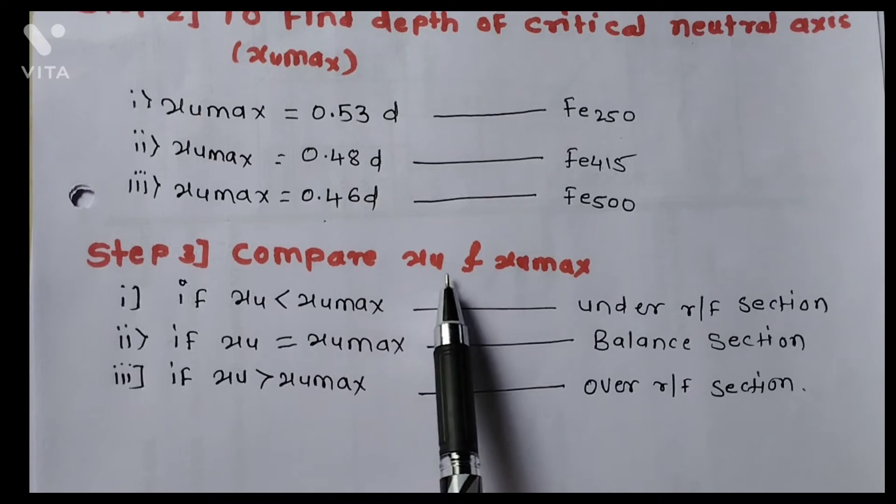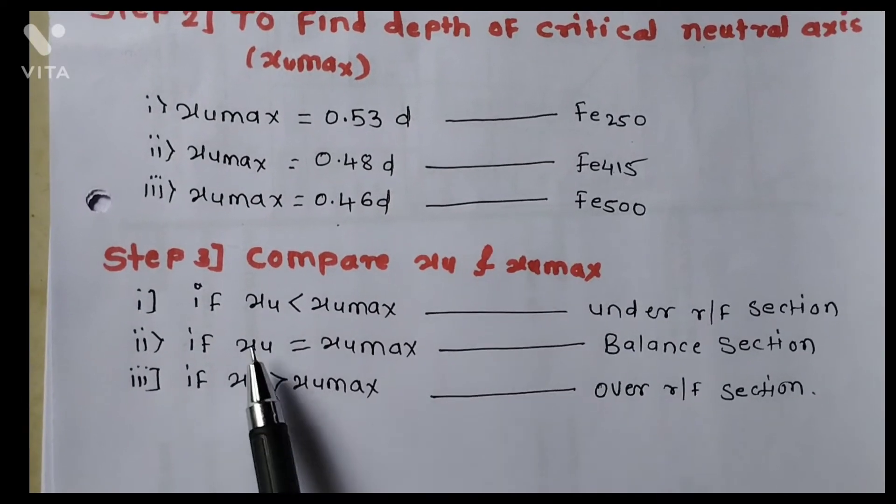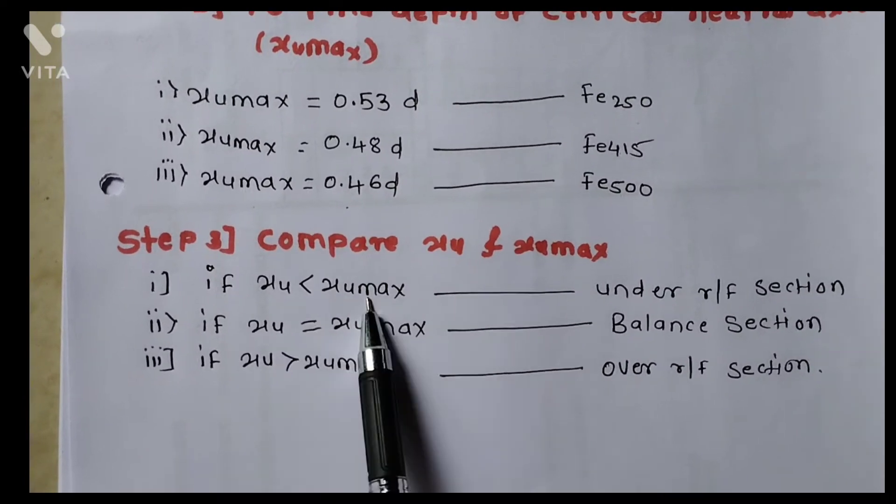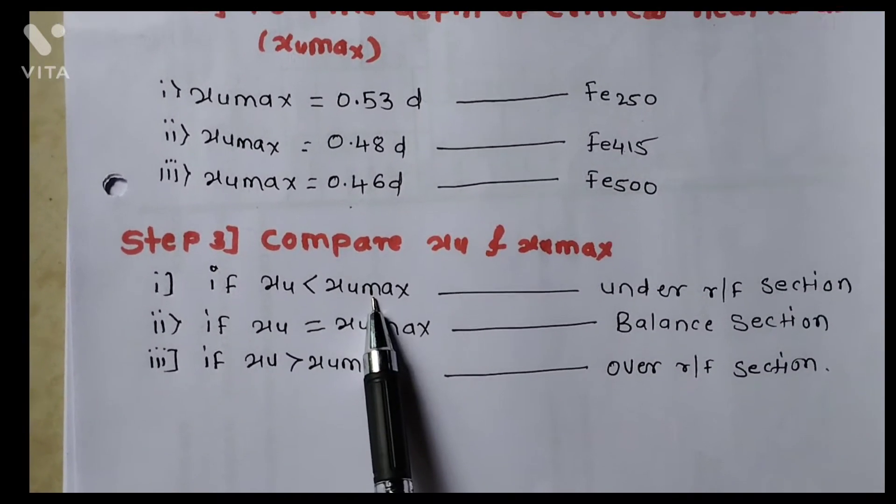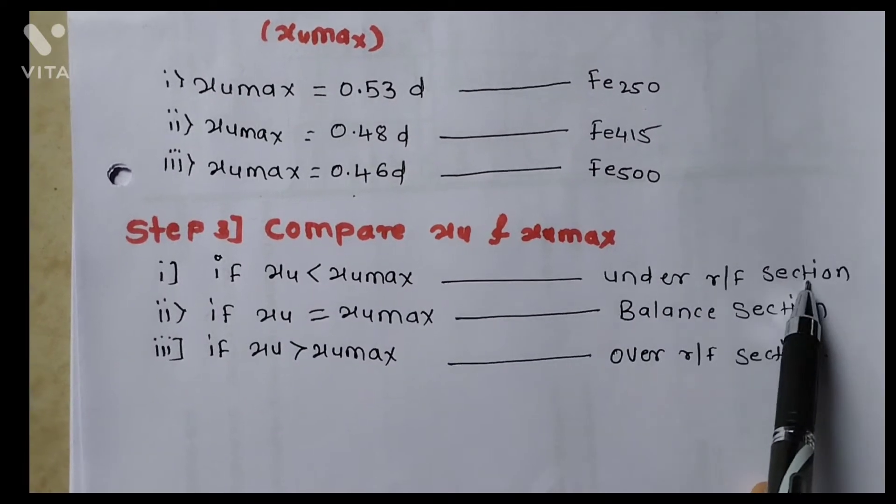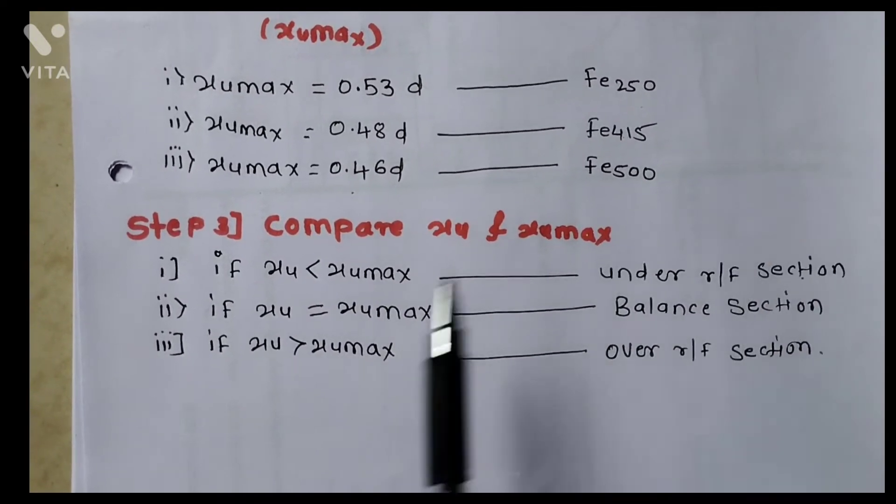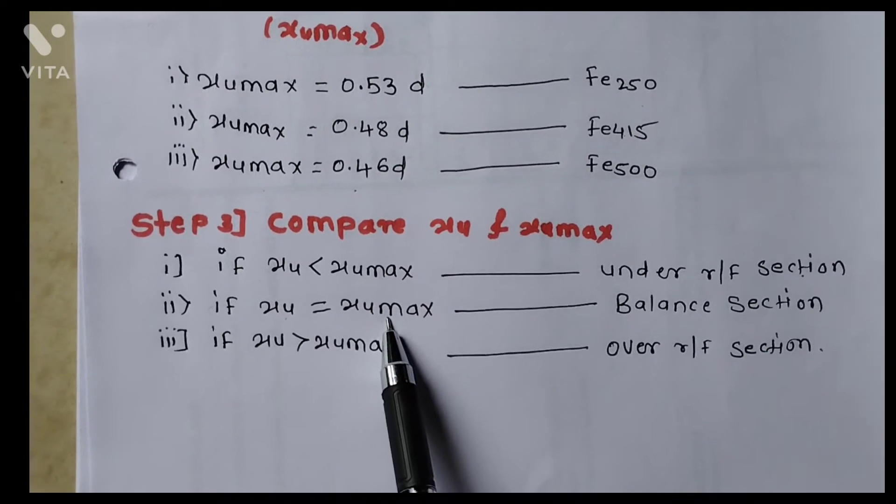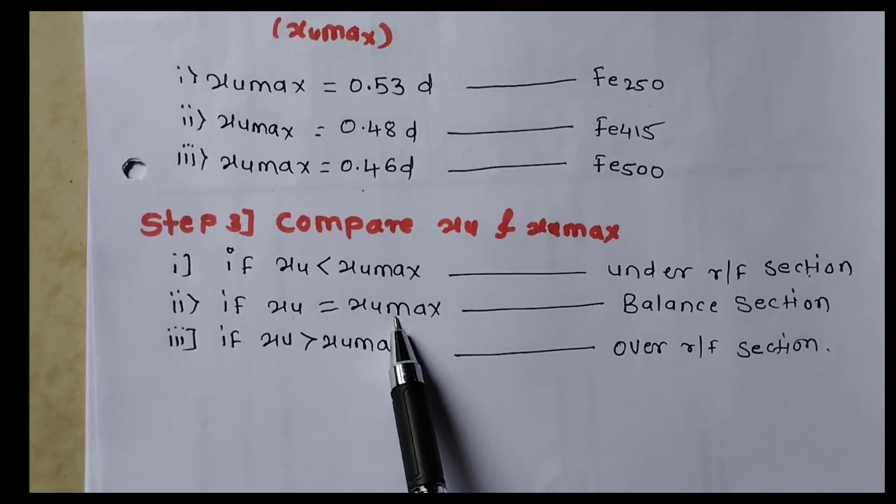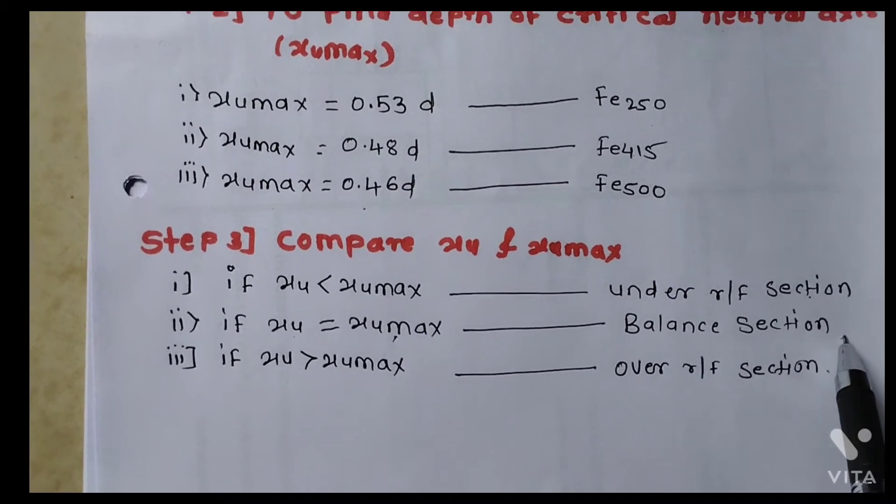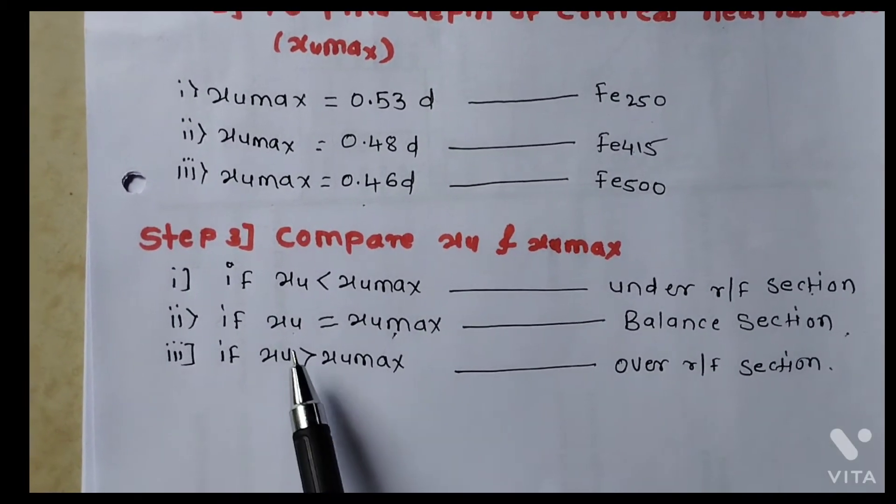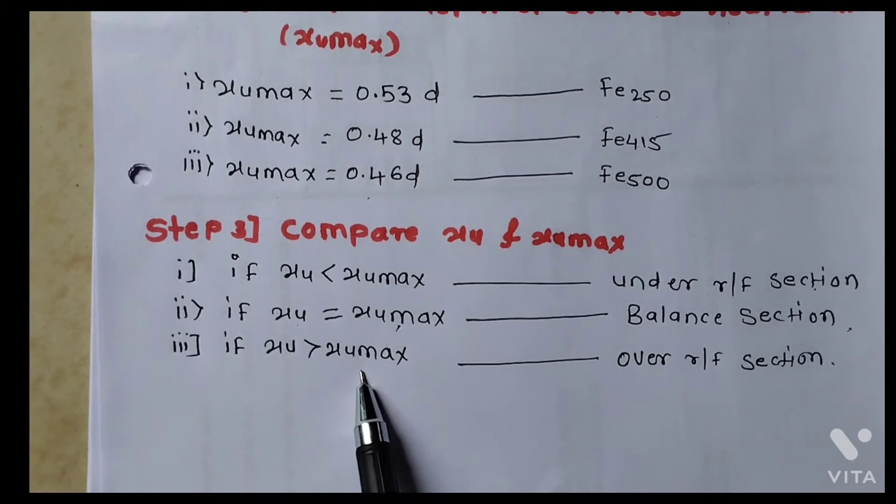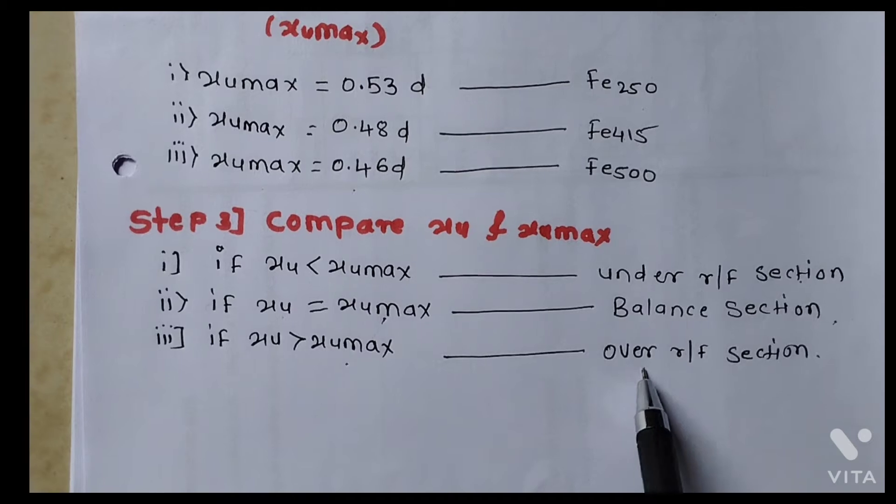Step 3: Compare the xu and xumax. If xu is less than xumax, then it is under-reinforced section. If depth of neutral axis is equal to the depth of critical neutral axis, then it is balanced section. If depth of neutral axis is greater than critical depth of neutral axis, then it is over-reinforced section.